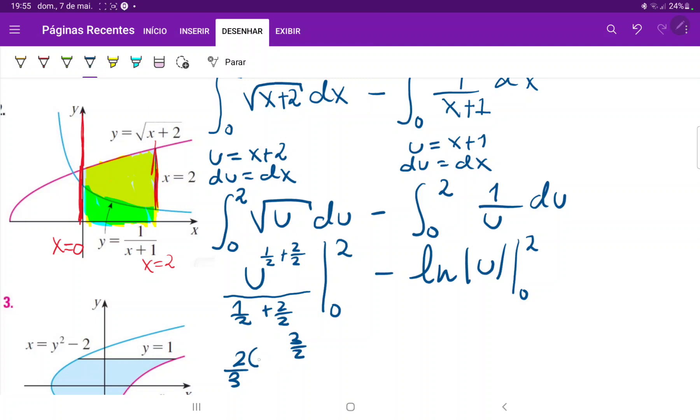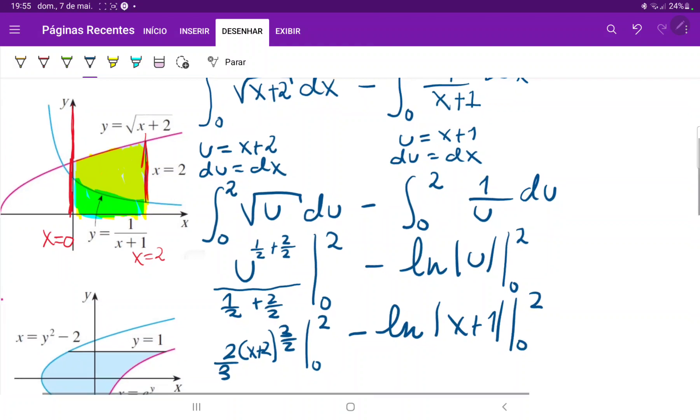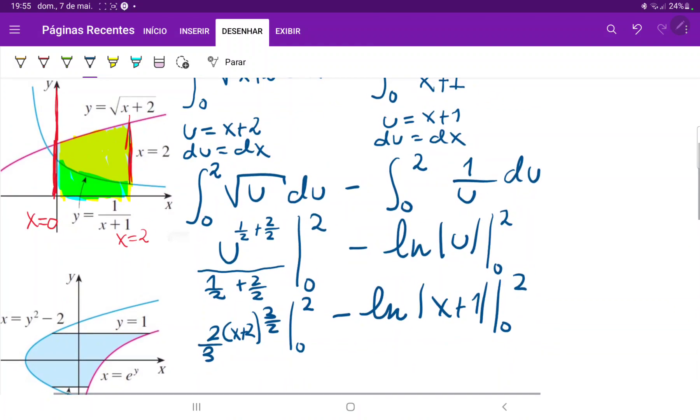This is x plus 2, I ran out of space there, from 0 to 2, and then minus ln of x plus 1 from 0 to 2. So when we apply these boundaries, on the left we do have 2 plus 2 which is equal to 4, right?